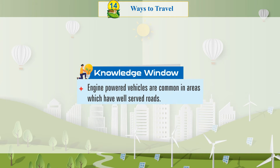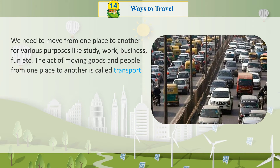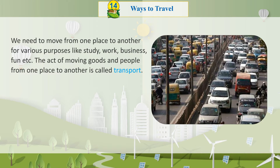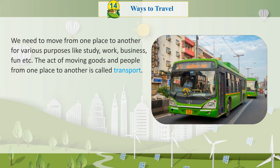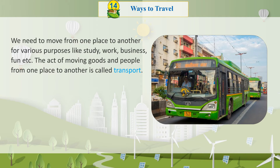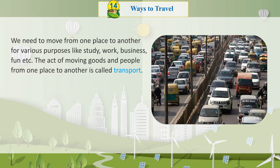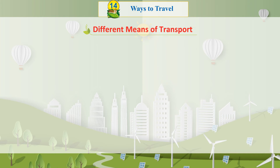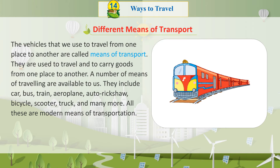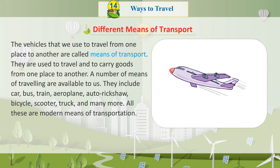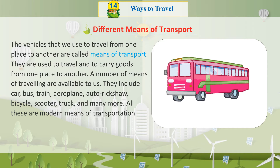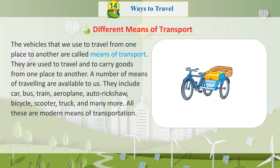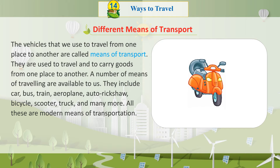Knowledge Window: Engine-powered vehicles are common in areas which have well-served roads. We need to move from one place to another for various purposes like study, work, business, fun, etc. The act of moving goods and people from one place to another is called transport. The vehicles that we use to travel from one place to another are called means of transport. They are used to travel and carry goods from one place to another.